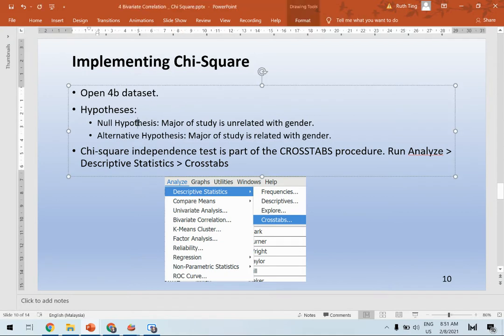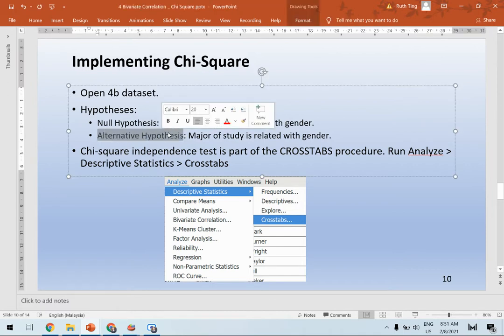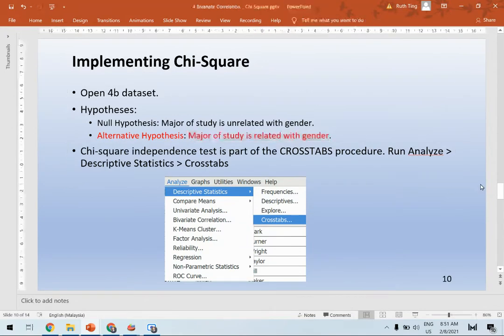Let's look at this dataset, the 4b dataset, in which we have a hypothesis. Let's look at the alternative hypothesis: major of study is related with gender, which means that different genders, male or female, is going to decide your major of study.